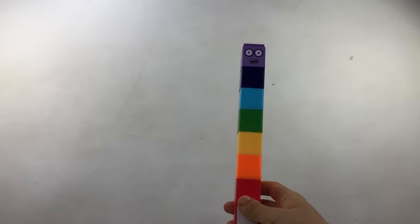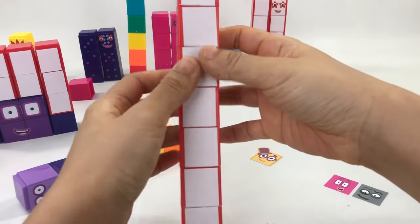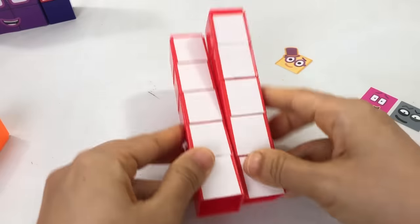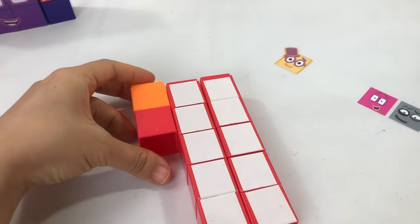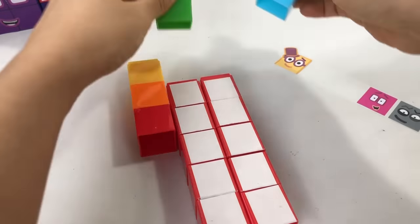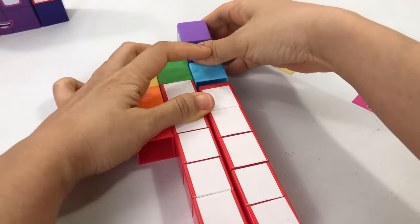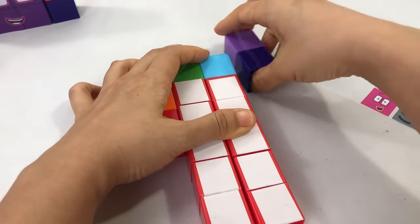We can also build number block 17 the way he usually appears in the show. Like this. First, we'll rebuild his white blocks into a rectangle, then rearrange his rainbow-colored blocks on top. Did you know that 17 keeps his paintbrush behind his ears?